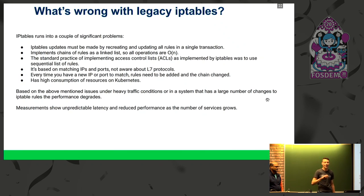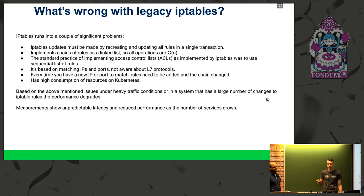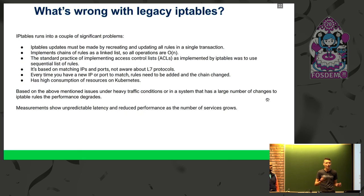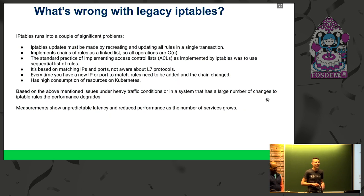The other issue is that IP tables is not fully aware of L7 protocols, so you can't filter HTTP calls, for example. You can't filter particular database queries. It's all based on IP addresses and ports — layer three, layer four. And the other thing is that IP tables operates on the concept of chains and rules, and to add a rule to the chain you basically operate on a linked list.